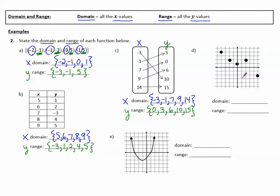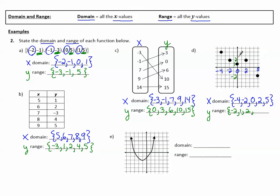In D, I'm looking for the domain, which is x. Looking at the points, the x values are: negative 4, negative 2, 0, 2, and 5. The range is the y values. Starting at the lowest point, I see negative 2, then moving up I see 1, then 2 — and even though 2 goes with 2 points, I only record the distinct y value — and then 3 and 4. That's the range.